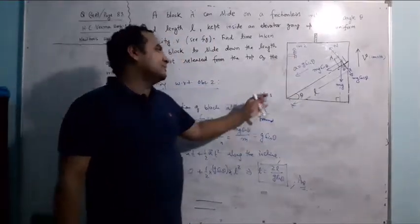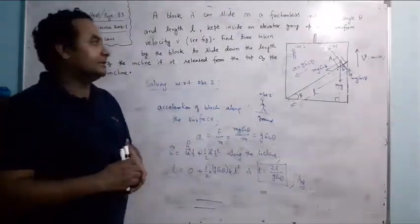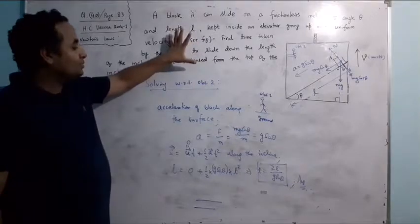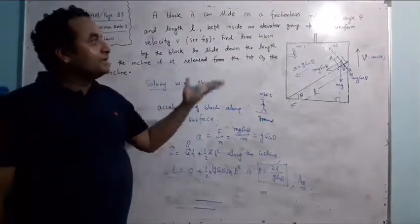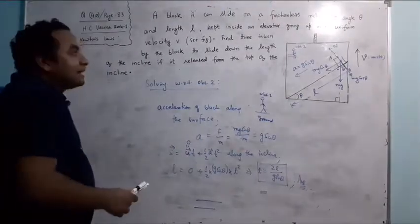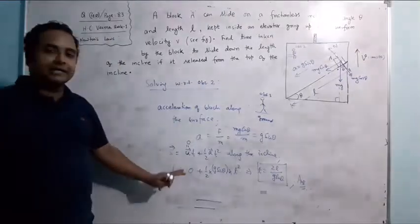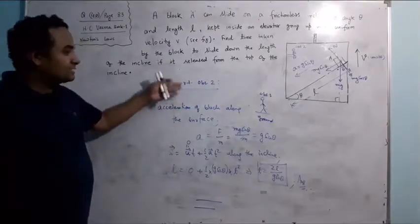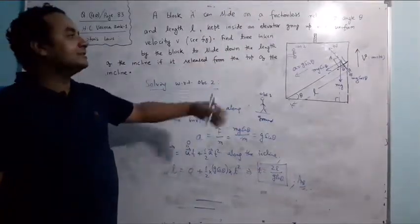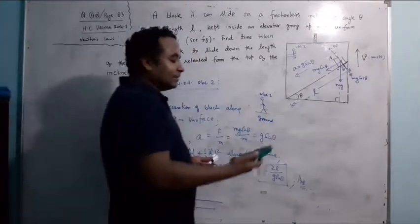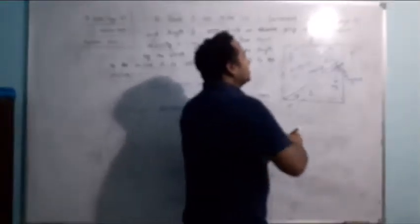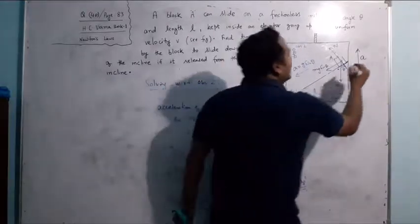Both Observer 1 and Observer 2 will notice the same time — time is independent of frame. This completes the S.C. Varma question. Now let's extend it: suppose the elevator is going upward with a constant acceleration A₀ instead of constant velocity. How would we solve this modified question?